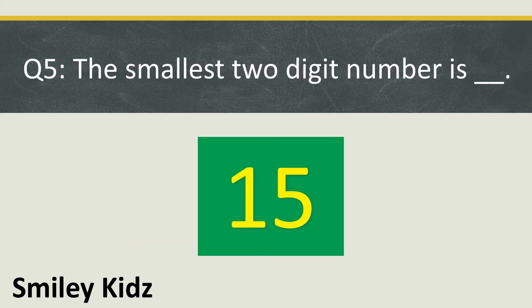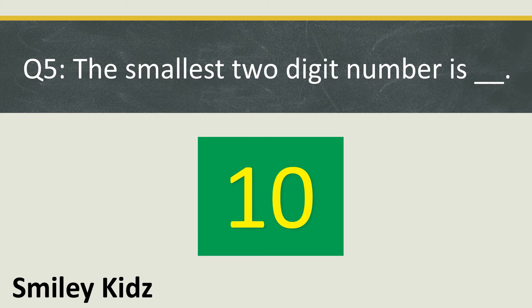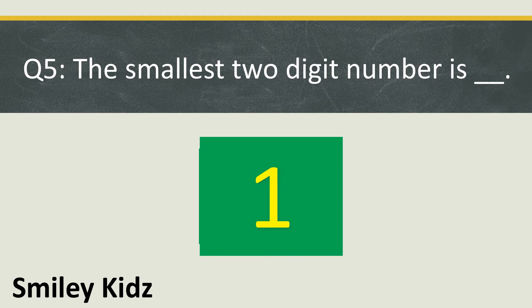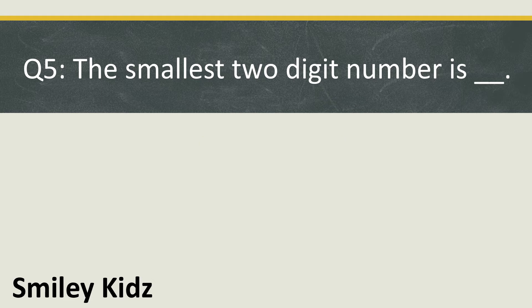Question number 5: The smallest two-digit number is... Your time starts now. Your time is up. The right answer is 10. The smallest two-digit number is 10.